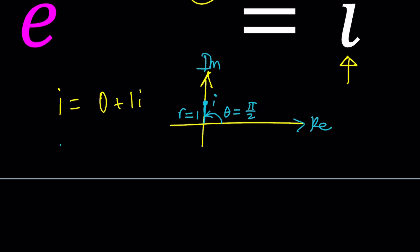So, in other words, i can be written as e to the power i times pi over 2. In general, a complex number can be written as r times e to the power i theta, where r is the modulus or the absolute value, and theta is the argument.